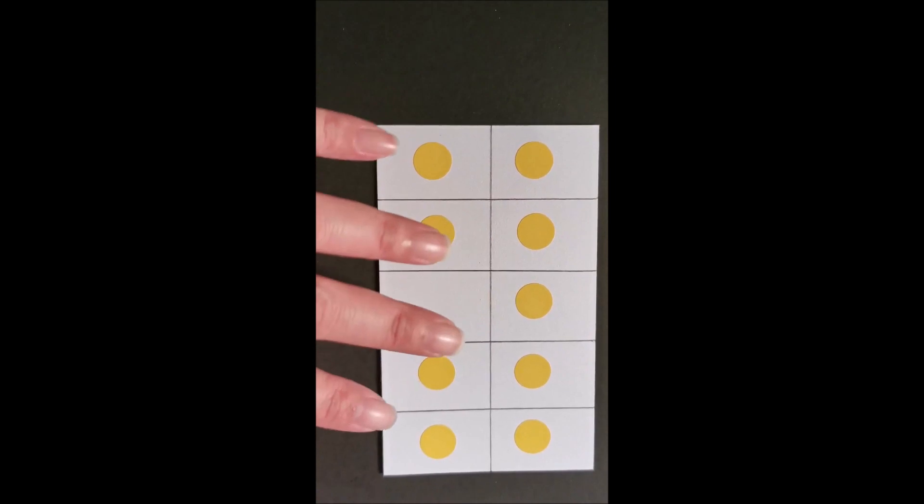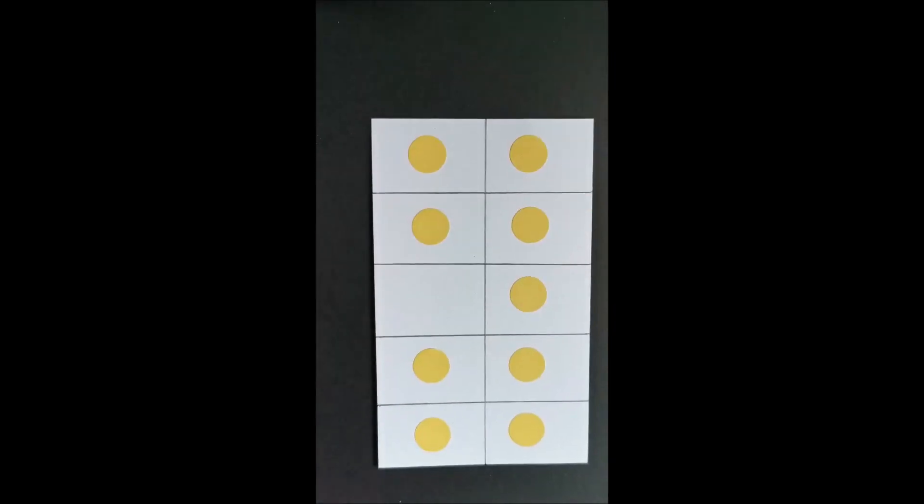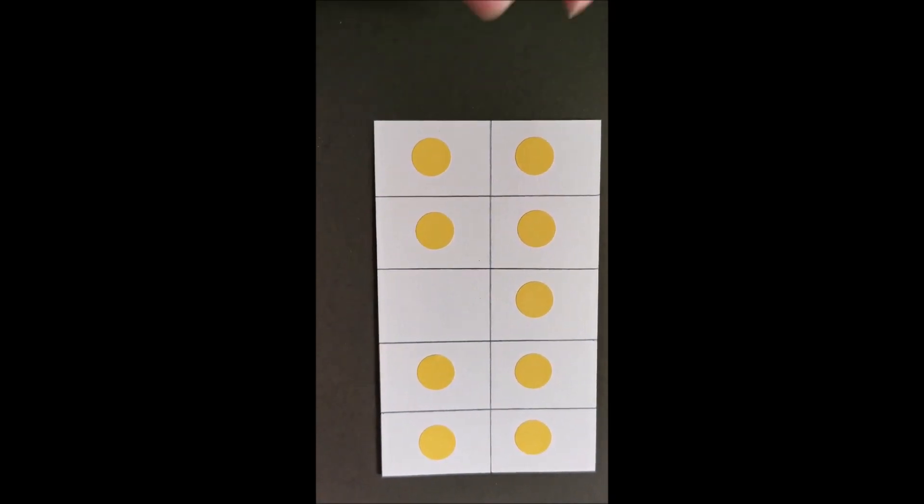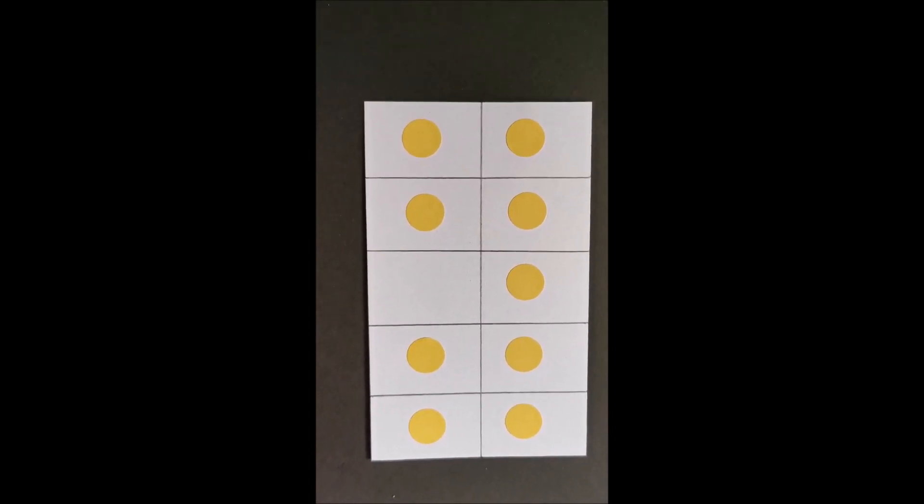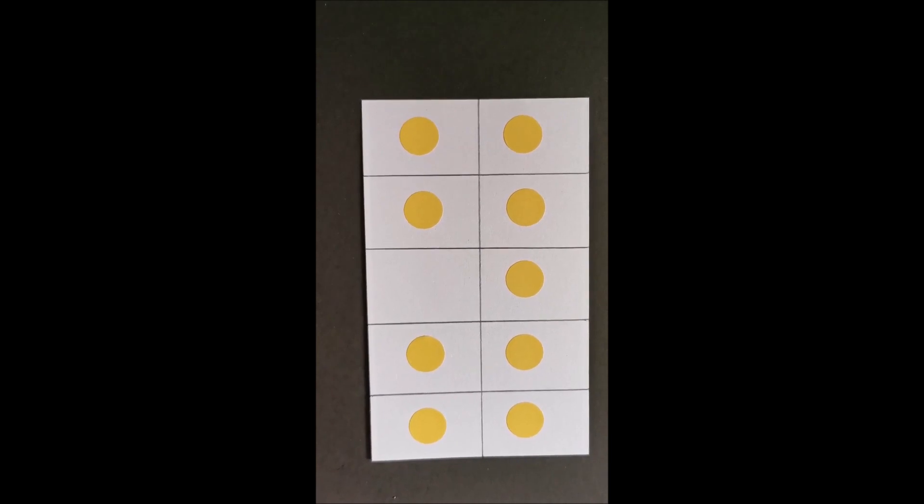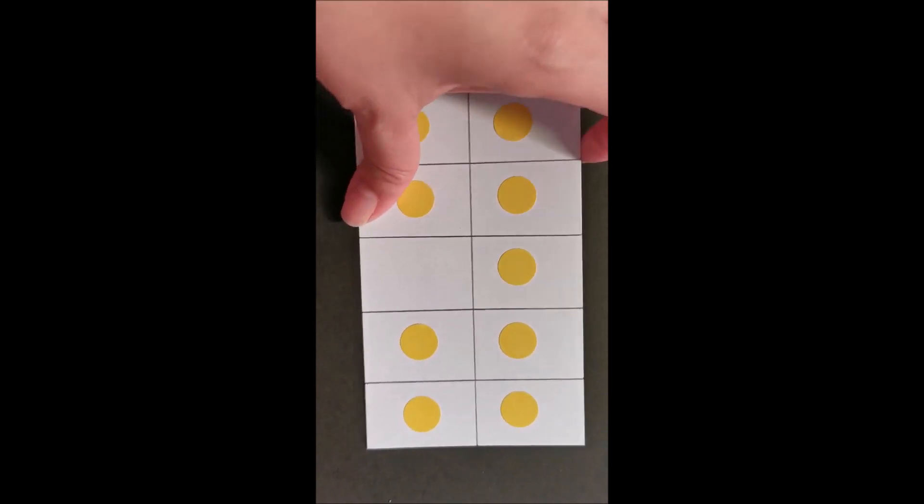So if we're looking at 9, they could be looking at the top part as having 5 because it's a tens frame, and then the bottom part could be 5 minus 1, so they're practicing subtraction just by taking away the one that's empty.